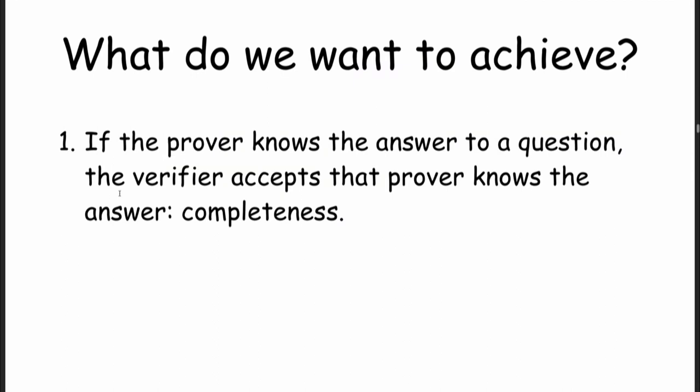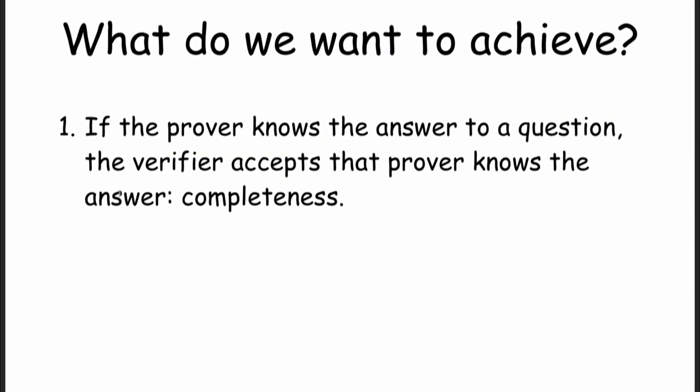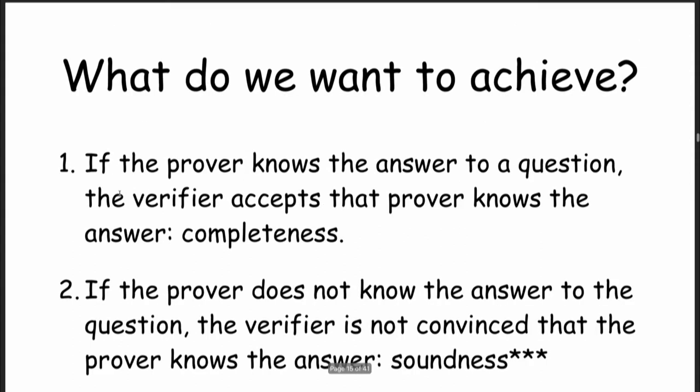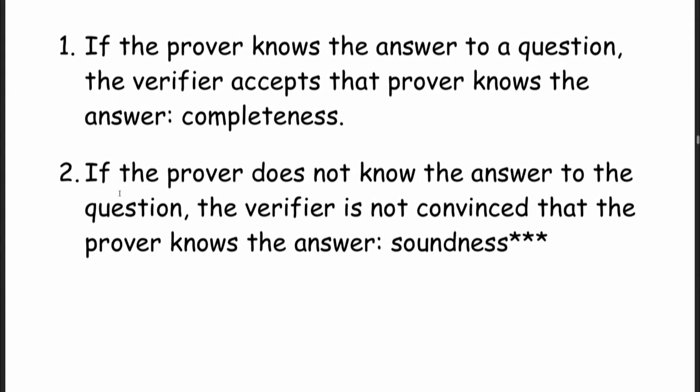Properties we want to achieve: the first property is called completeness. This is that if the prover knows the answer to the question — or has a witness for the statement — the verifier will accept that the prover knows the answer. If you're proving a true thing, the verifier accepts the proof. The next thing is soundness: if the prover does not know the answer and tries to make a proof anyway, the verifier is not convinced — meaning if you're trying to lie, the verifier will catch you. There are a lot of different flavors of soundness.